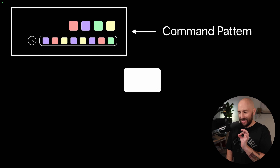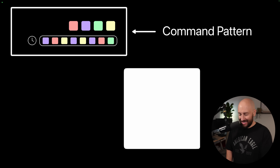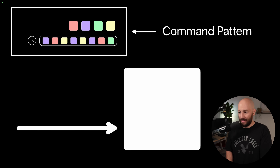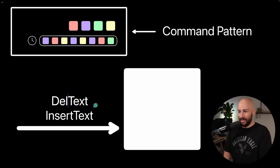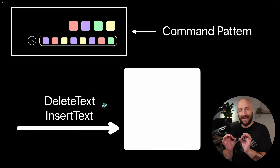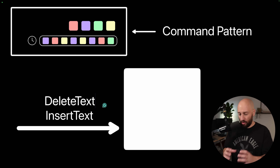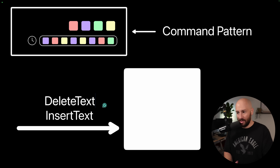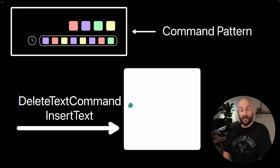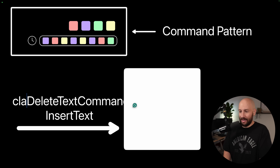The command pattern says: take the various actions that you can do in your system. So if we're talking about a text editor, this can be insert text or delete text. The command pattern says what you should do is encapsulate each one of these actions in its own object. So this won't be the delete text method — this will be the delete text command, and this itself will be a class.